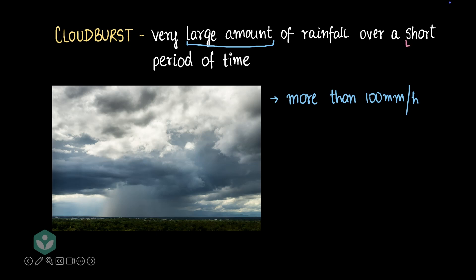What is this very short period of time? This could be a few minutes or it could even be a few hours. Sometimes cloudbursts have happened for just two minutes and wreaked havoc. Sometimes cloudbursts have prolonged rainfall — maybe two, three, or four hours — and have wreaked havoc.